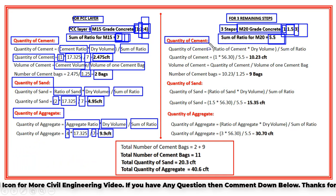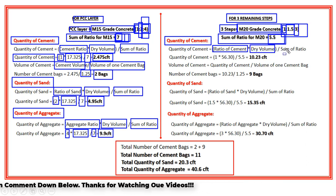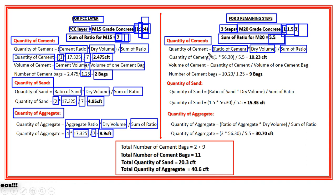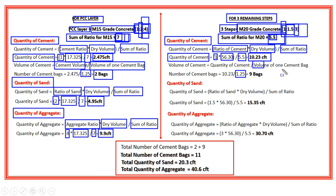The quantity of cement for the three steps = (ratio of cement × dry volume) ÷ sum of ratios. The ratio for cement in M20 is 1, the dry volume of the three steps is 56.30 cubic feet, and the sum of ratios is 5.5. So quantity of cement = (1 × 56.30) ÷ 5.5 = 10.29 cubic feet. Dividing by 1.25 to convert to bags: 10.29 ÷ 1.25 = 9 bags.